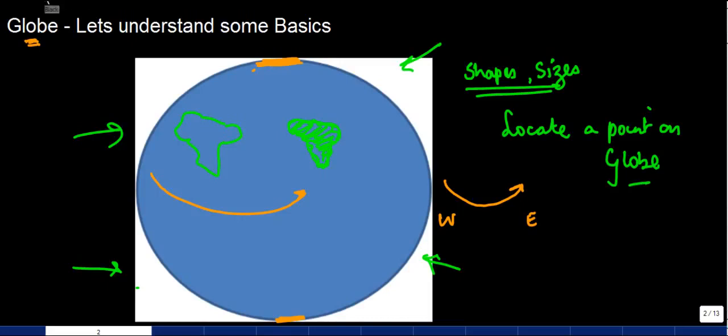To do this, there is a kind of a needle which goes through the globe something like this. If I tell you in practical and in real sense, there is no such needle which goes through the earth, but this is only when you look at a globe that you will get to see something like this. This needle effectively is what is basically called the axis.